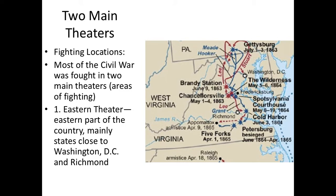The Eastern Theater will be the area basically in and around the two capitals — around Washington D.C. and around Richmond — largely in Virginia but not entirely. When you think of the Eastern Theater, think of the area near the two capitals of the United States and of the Confederacy. This is going to be fighting that largely involves Robert E. Lee and McClellan at first as his opponent, but later on Ulysses Grant. This is where Robert E. Lee and Stonewall Jackson will make names for themselves for the Confederate Army.